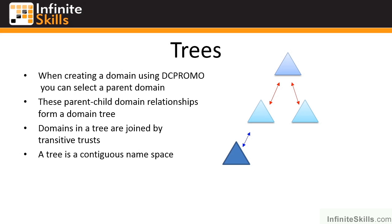A domain is a single boundary for security, accounts, and policy, and I can create relationships between domains. I can create a tree, which is a contiguous namespace. So if my tree root domain was called SavileTech.net, the next domains down could be dev.saviltech.net or sales.saviltech.net — that's a contiguous namespace. They have a parent-child trust relationship, which makes these transitive trusts.